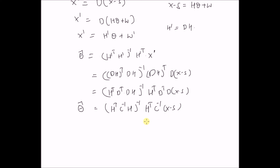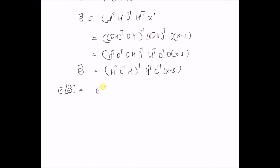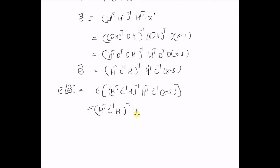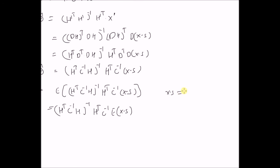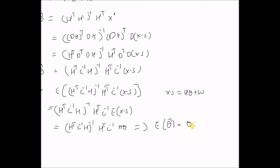Now let us look at the moments of this estimator. The expectation of theta hat equals (H^T C⁻¹ H)⁻¹ H^T C⁻¹ · E[X − S]. Since E[X − S] = H theta, this becomes (H^T C⁻¹ H)⁻¹ H^T C⁻¹ H · theta. The two matrix products cancel to give the identity, so E[theta hat] = theta — the estimator is unbiased.